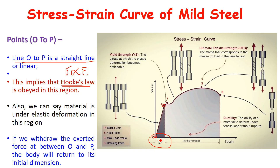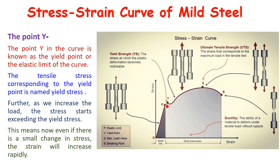Elastic deformation means that within this zone, if you remove the external load or external force, the body will return to its initial dimensions. That is the meaning of elastic deformation. The second zone is from P point to Y point. Point Y on the curve represents the yield point, also called the elastic limit of the curve. The yield point is the point where the material just starts to form cup-and-cone or necking deformation.